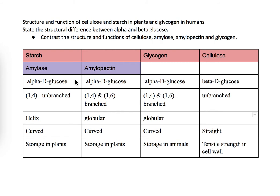Both amylose and amylopectin are used as energy storage in plants. Glycogen is also made out of alpha-D glucose. It also has 1,4 and 1,6 bonding and is branched, globular, and curved. However, the key difference is that glycogen is used for storage in animals.